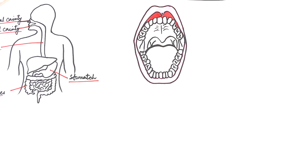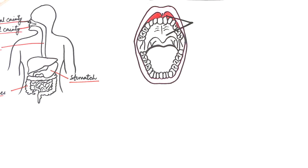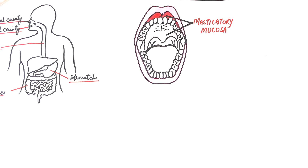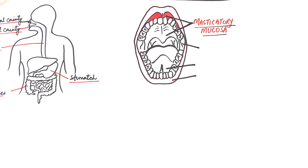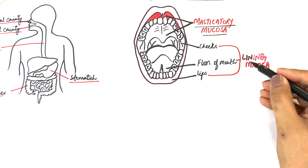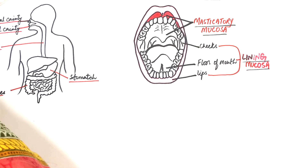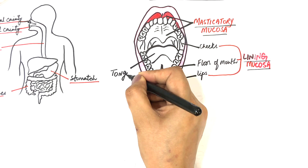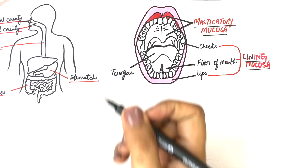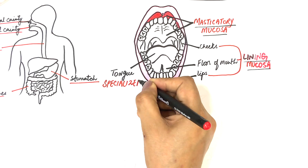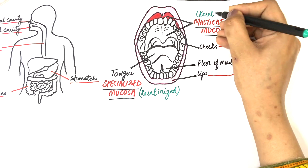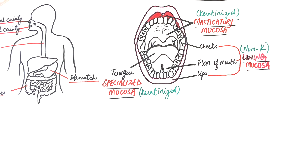The masticatory mucosa is located in areas that bear a high amount of functional or masticatory loads, like the gingiva and the hard palate. Lining mucosa lines the cheeks, the lips, and the floor of the mouth. The specialized mucosa is located on special areas responsible for the sense of taste, hence it is located on the tongue. The masticatory and specialized mucosa is keratinized, whereas the lining mucosa is non-keratinized.